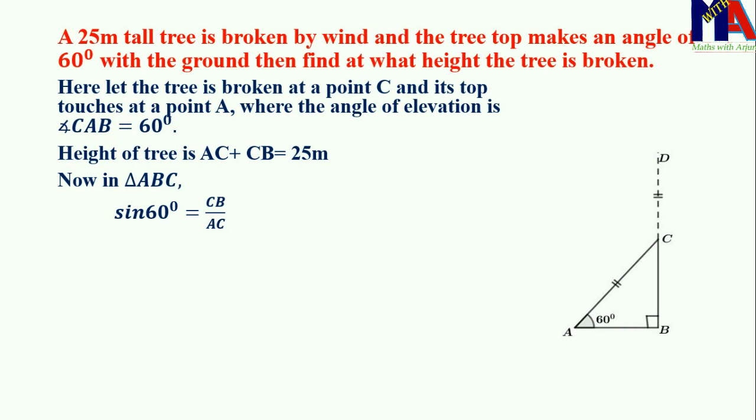Then sin 60 degrees equals P, that is the opposite side of the reference angle. Here the reference angle is 60 degrees and its opposite side is CB. Then CB by hypotenuse, opposite of 90 degrees, that is AC side.